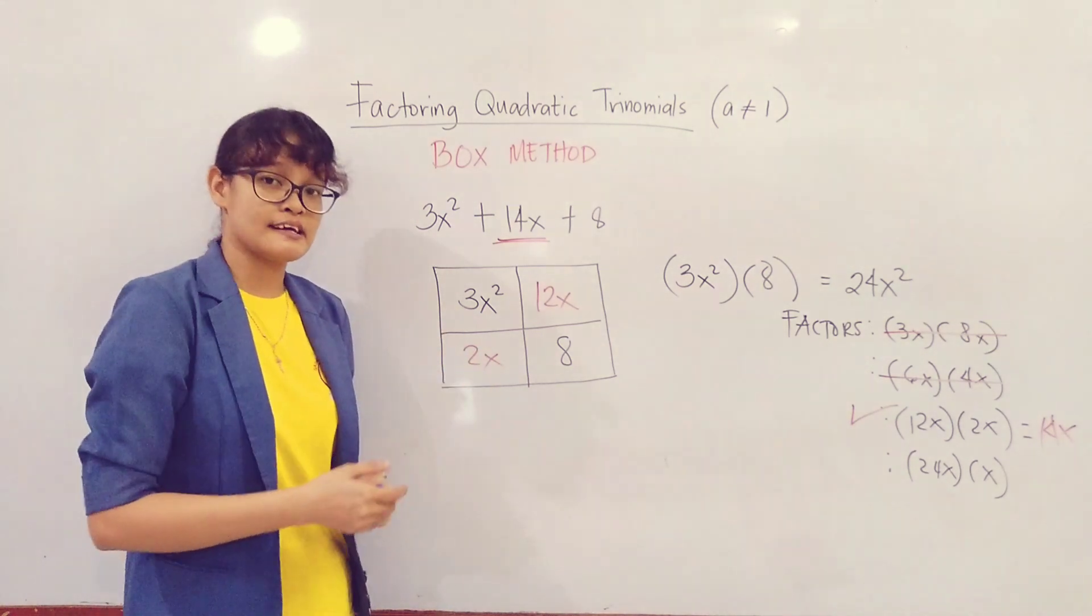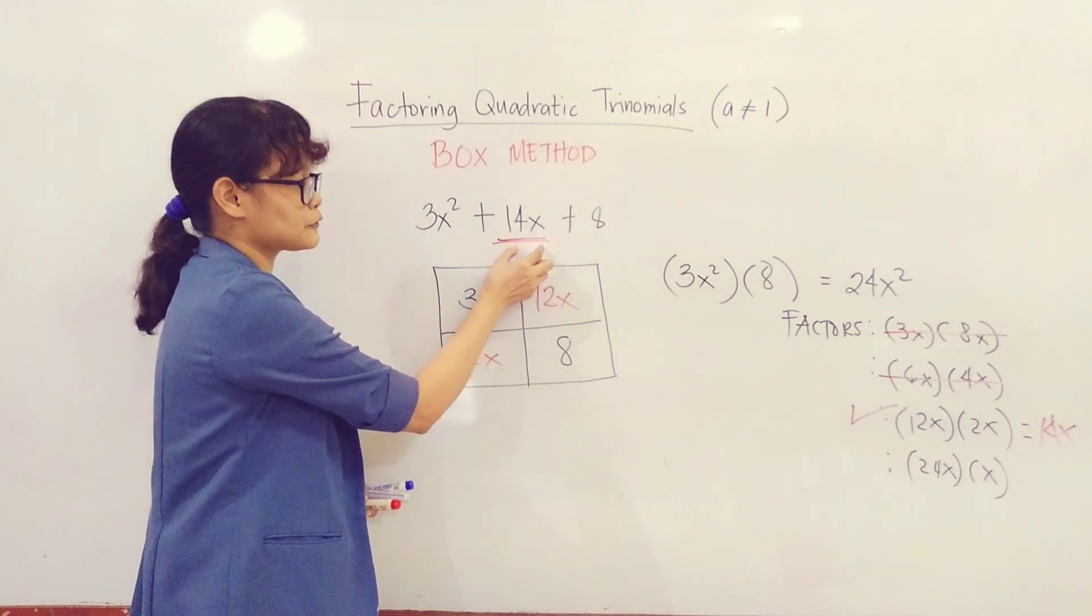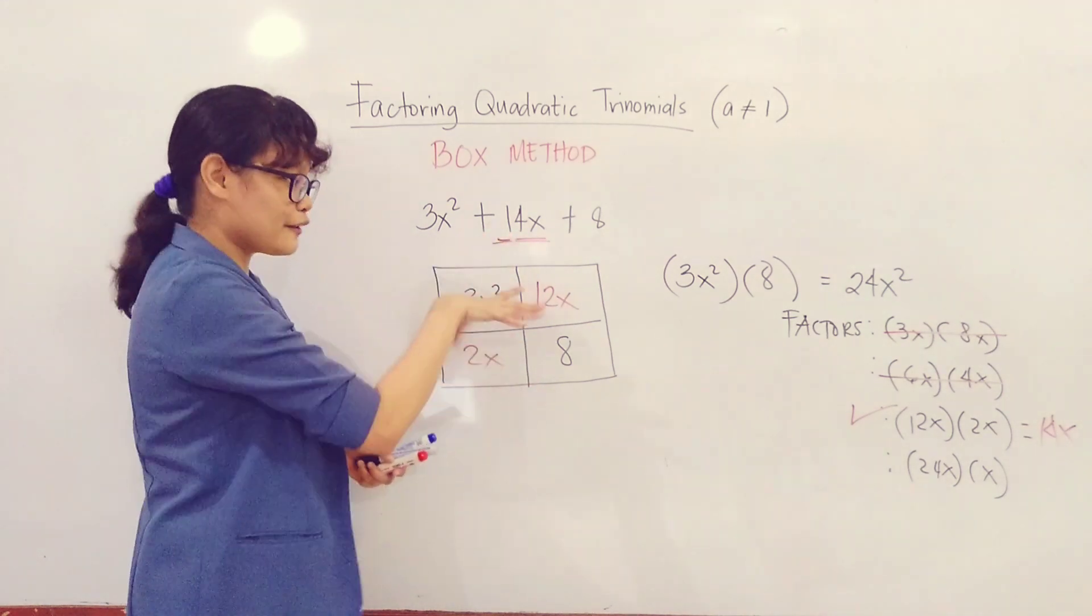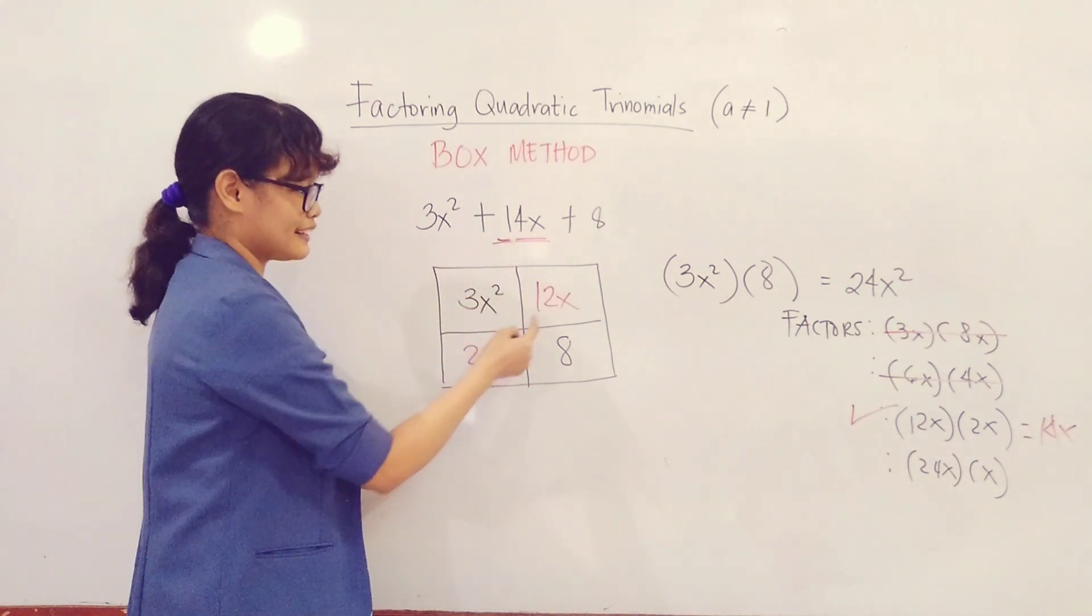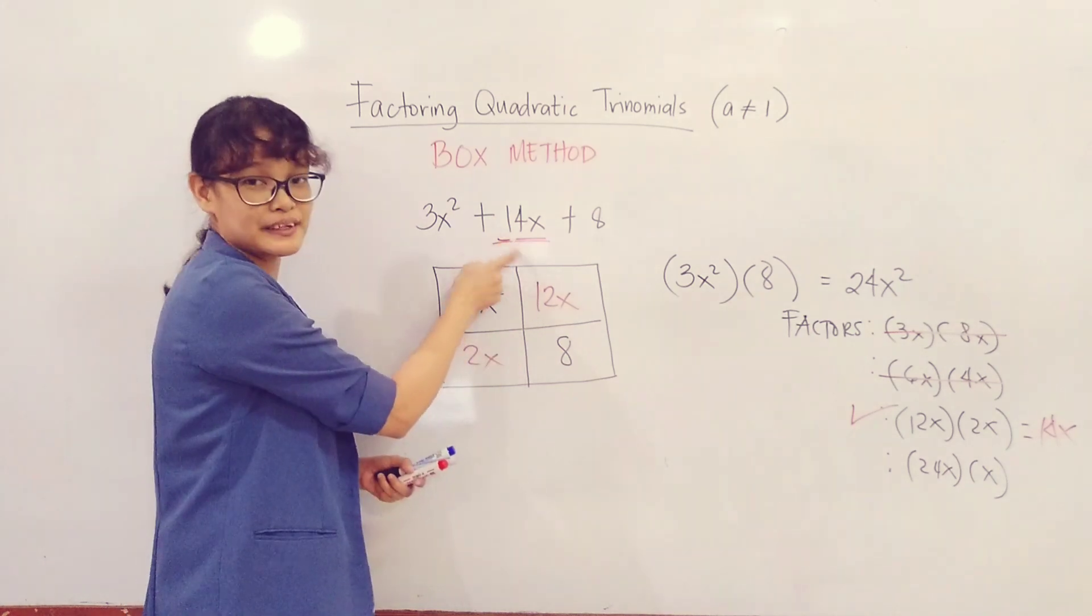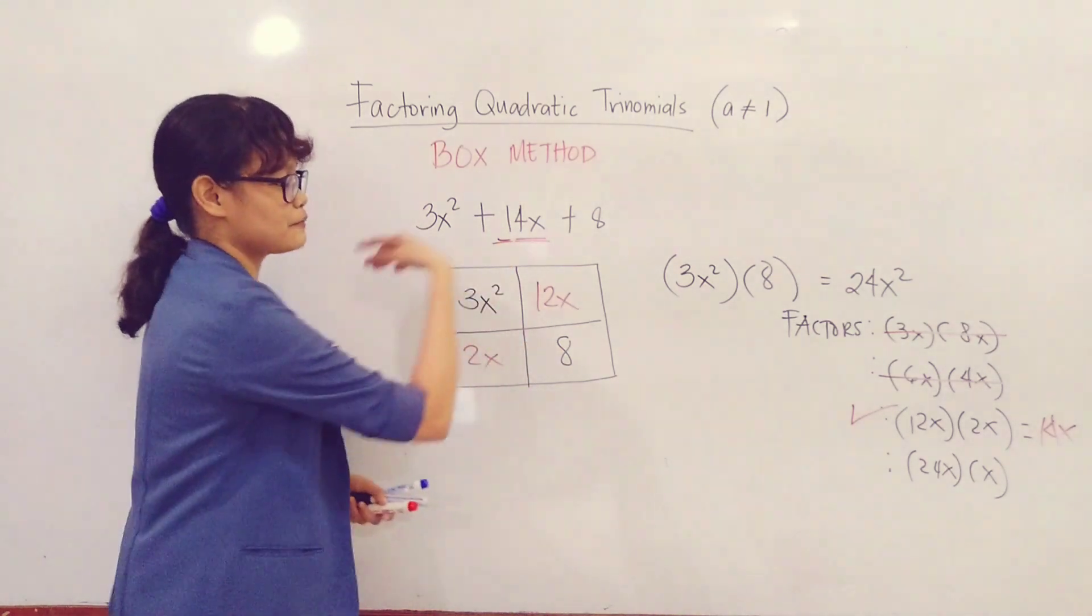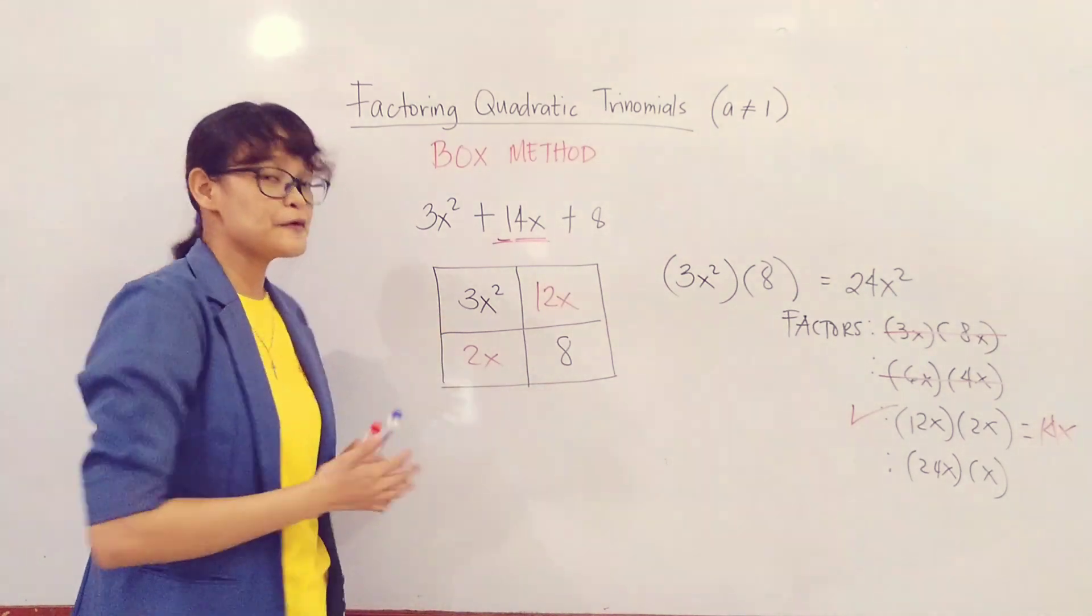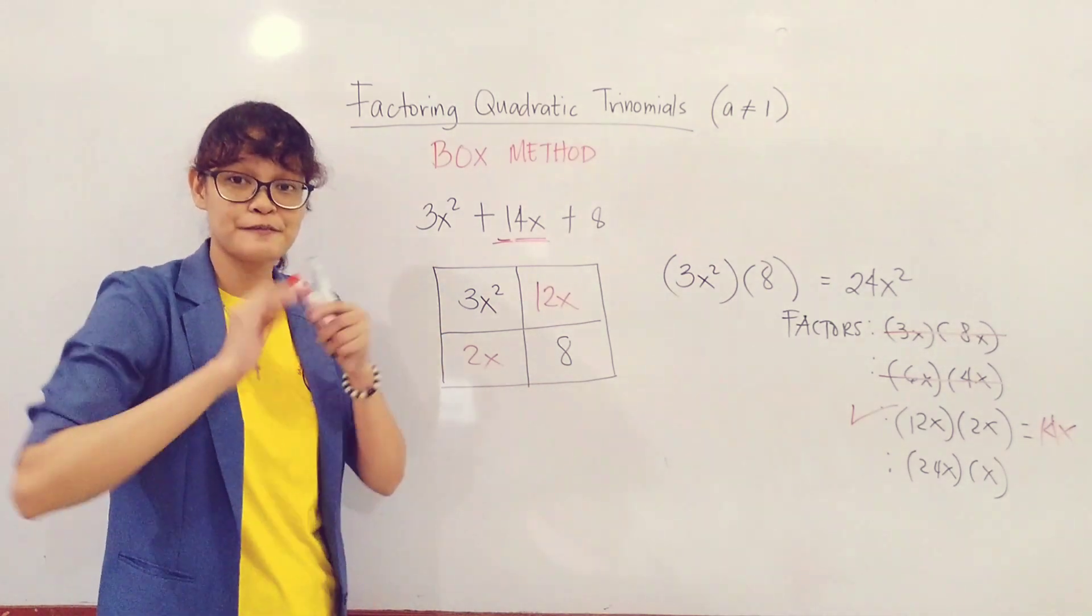So we will write them in the two empty boxes. The order doesn't matter, you can place them anywhere. So let's have 12x and 2x. Now, what's very interesting here is that I didn't place the 14x itself in the box. Instead, I placed two numbers that when added give the same answer. So we're done filling in the boxes.